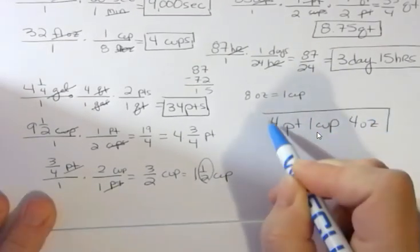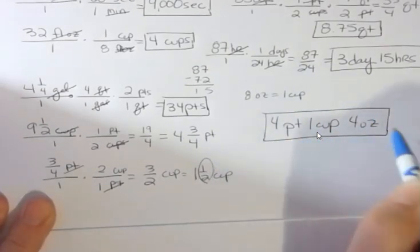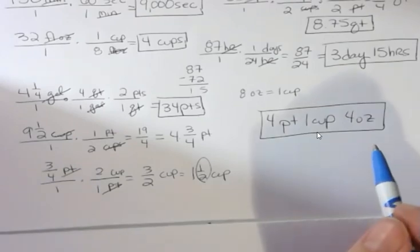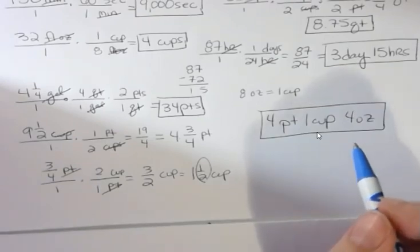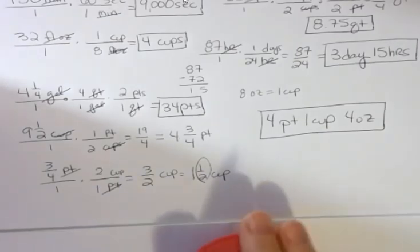From the chart, eight fluid ounces equals one cup, so half a cup is four ounces. The final answer is four pints, one cup, and four ounces. That one is tricky — if you watch the video or find another one on YouTube, you'll start to see how it works. Have a fantastic day!